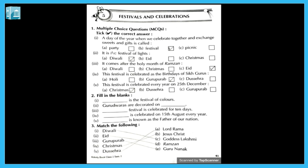Fourth one: this is celebrated on 15th August every year — 15th August pe every year kya celebrate karte hain? Answer: Independence Day. Independence Day is celebrated on 15th August every year. Fifth one: this person is known as the father of our nation — father of our nation kaun hain? Answer: Mahatma Gandhi.